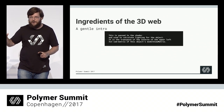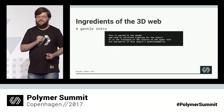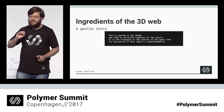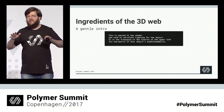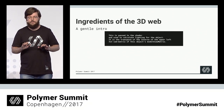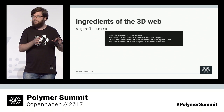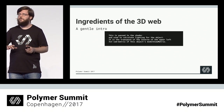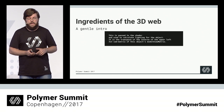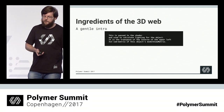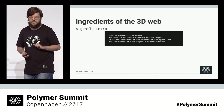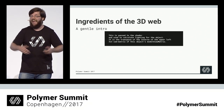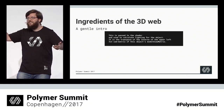This is an excerpt from an actual tutorial for beginners. It reads — this is passed to the shader and used to calculate lighting for the object. OK, I get what a shader might be, and lighting for the object, I understand. It is the transpose of the inverse of the upper left 3 by 3 sub-matrix of this object's model view matrix. Obviously.